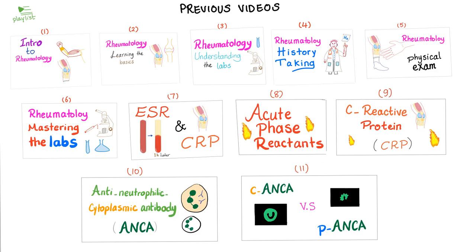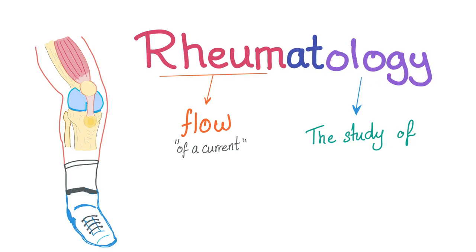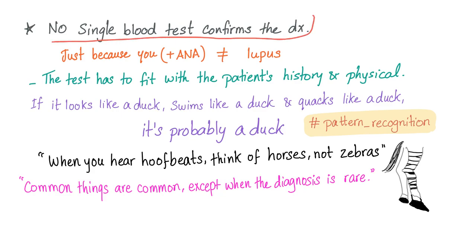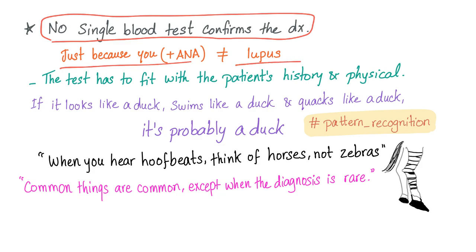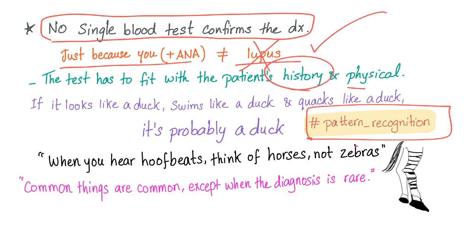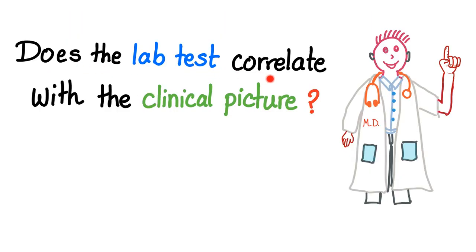Rheumatology — 'ology' means the study of, and 'rheuma' means the flow. They thought there was a fluid going through your body spreading symptoms. It's not actually a fluid; they are auto-antibodies. Welcome to rheumatology, where no single blood test can confirm the diagnosis. Just because you have a positive ANA doesn't mean you have lupus. Rheumatology is all about pattern recognition — the lab result must fit with the history and physical exam. The key question is: does the lab test correlate with the clinical picture?